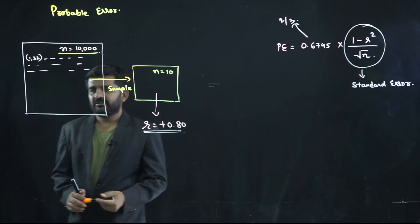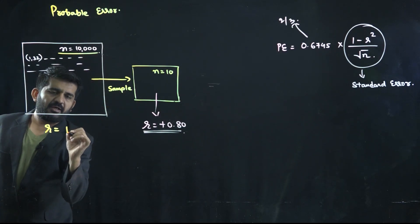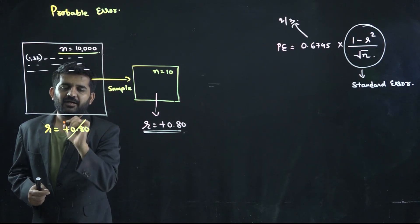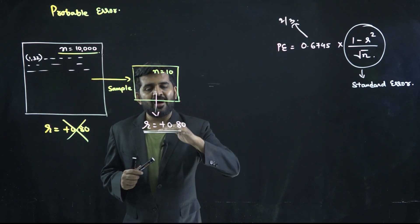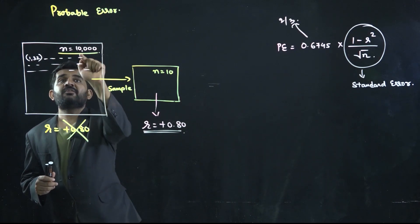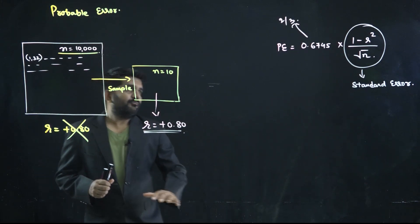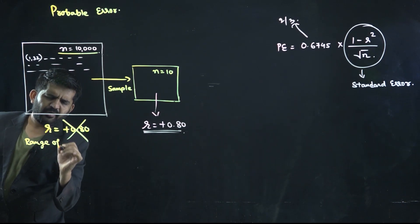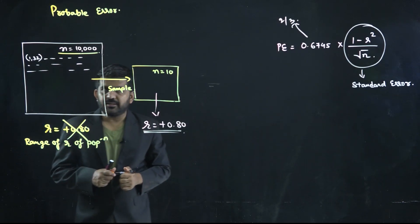Here is the key question: had you found out r for all 10,000 data, would it also be 0.80? The answer is no — it would be somewhat different. From the r of a sample, you cannot find out the r of the population directly without evaluating all 10,000 data. But with the help of probable error, you can find out the range of r of the population.